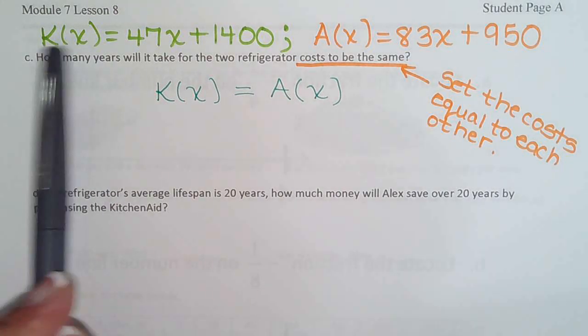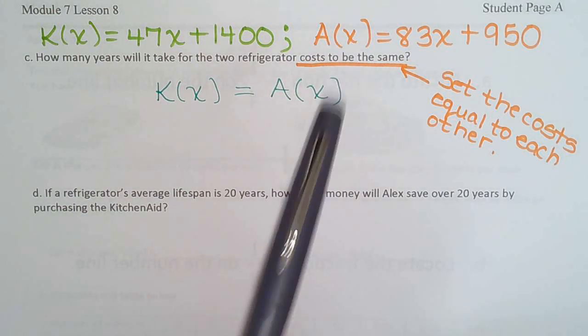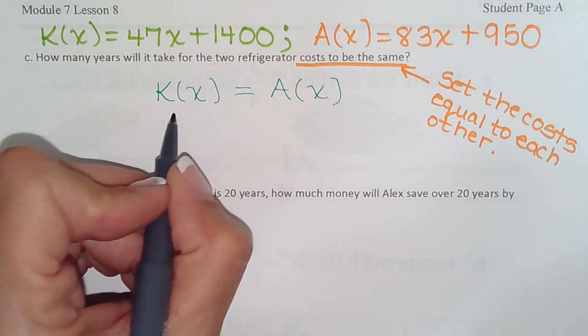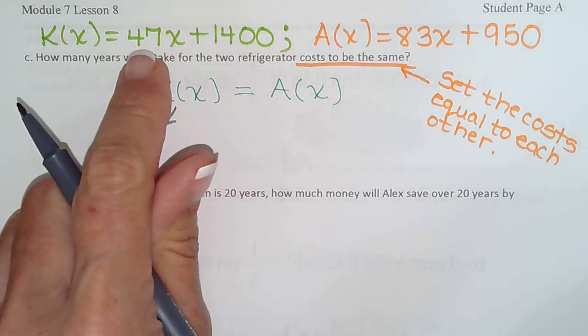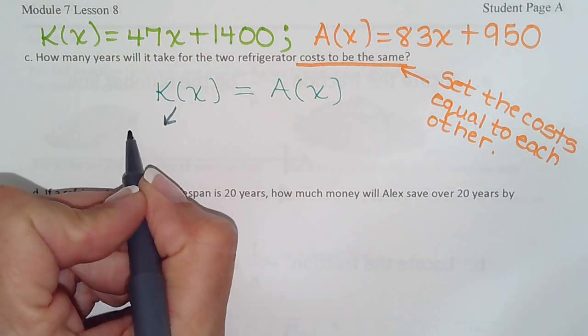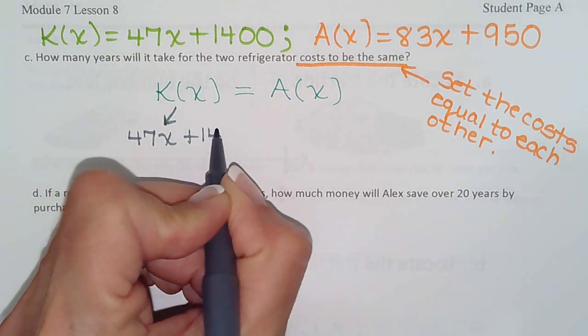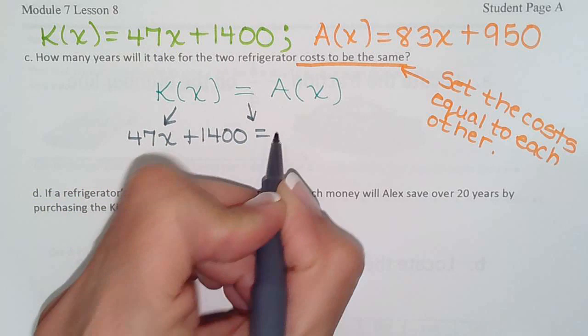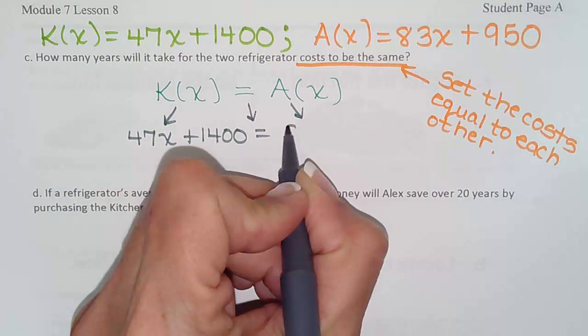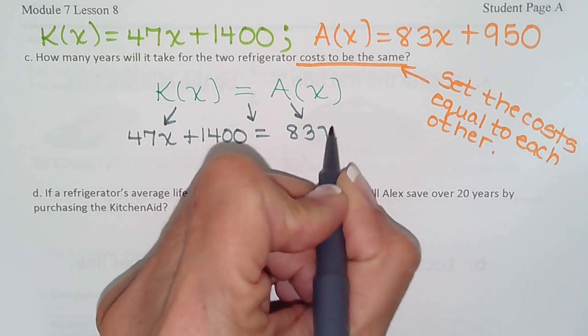Again, both equations are solved for Y, so we'll be using the substitution method. In place of K of X, we're going to put 47X plus 1,400. Bring down your equal sign, and in place of A of X, we will put in 83X plus 950.